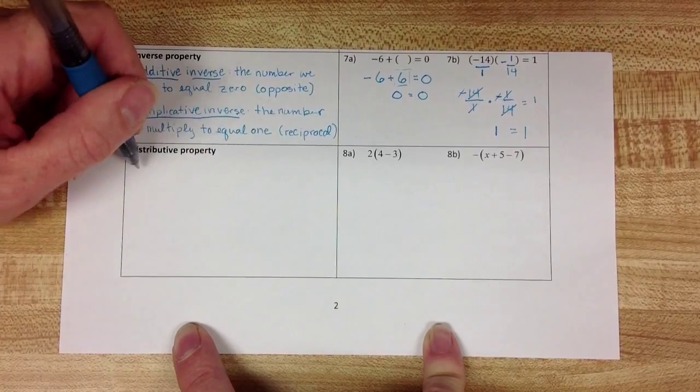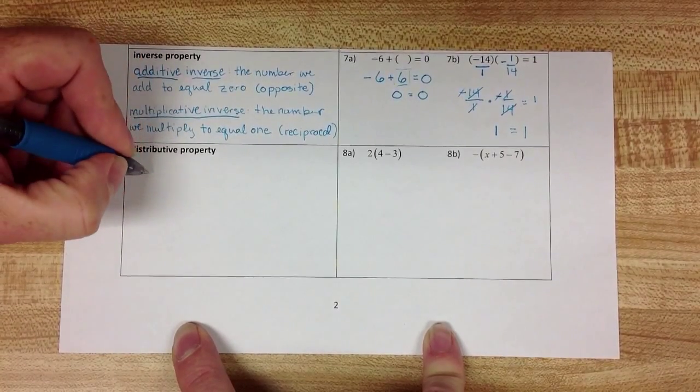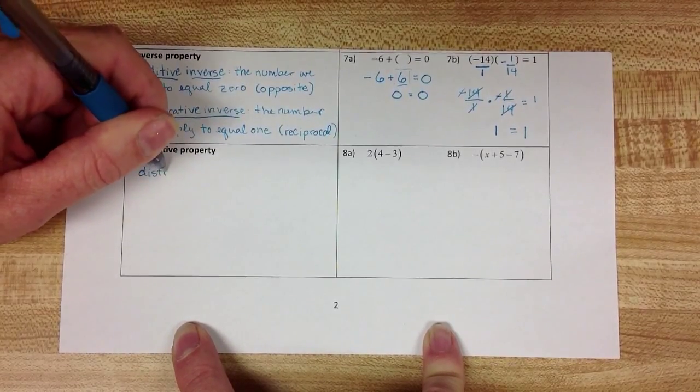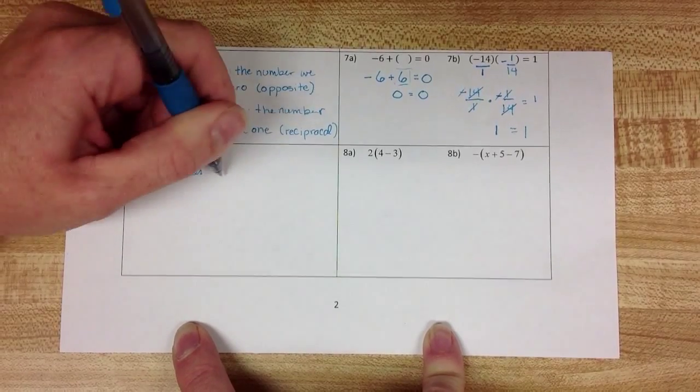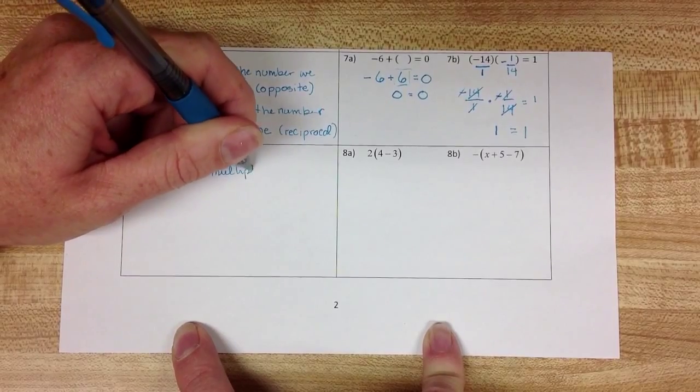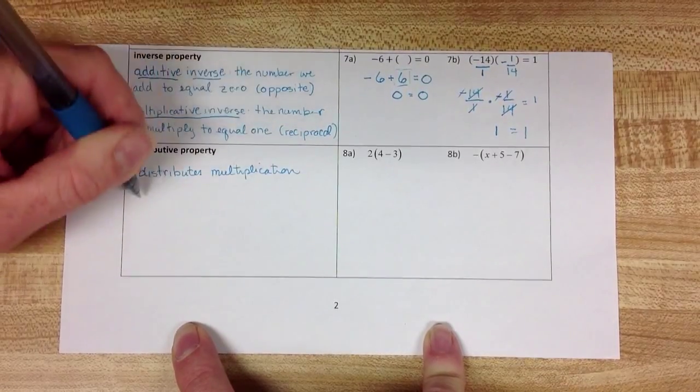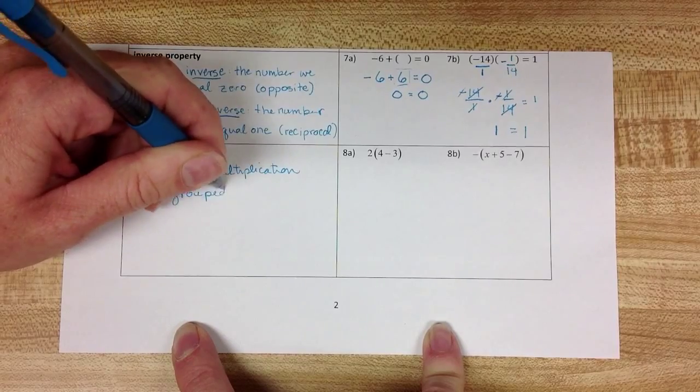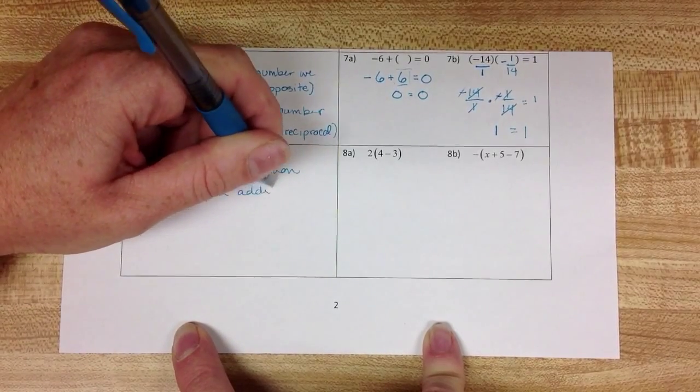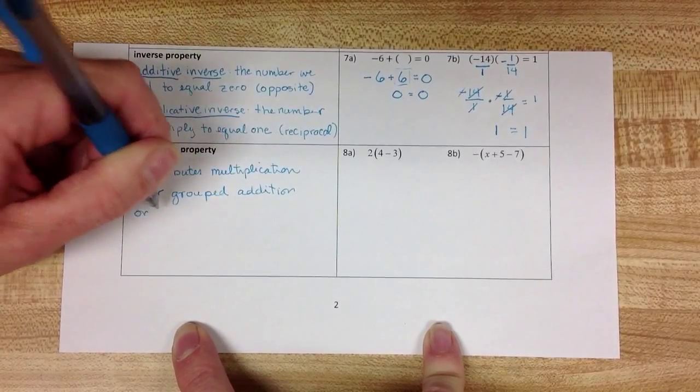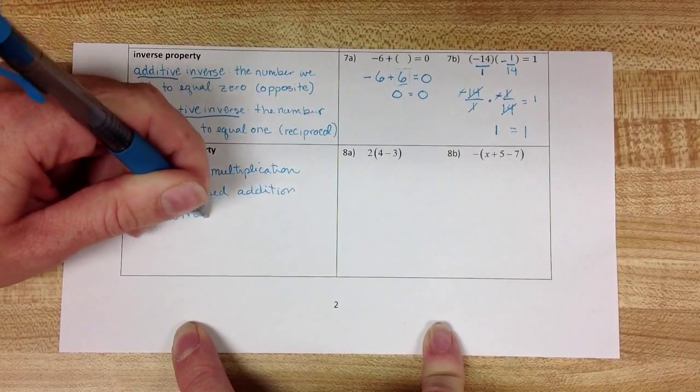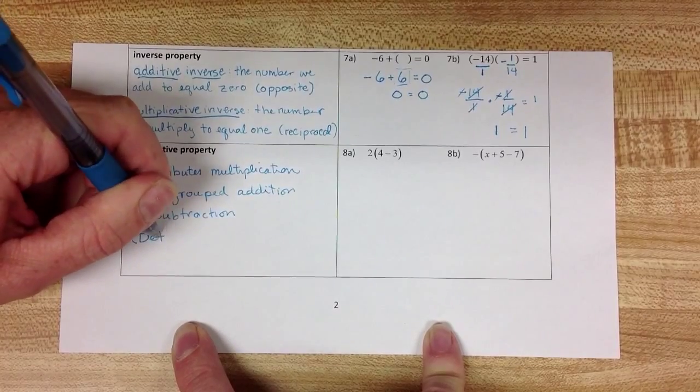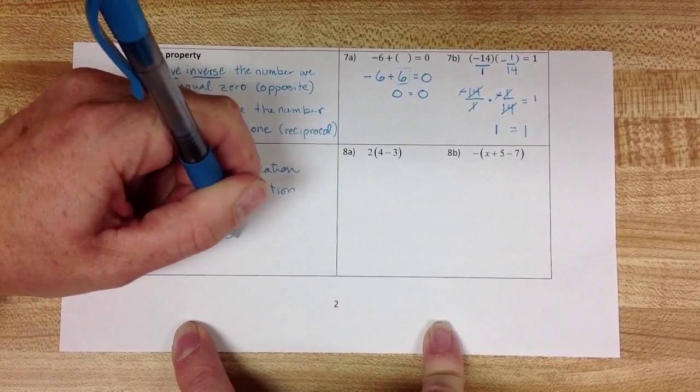So the distributive property says, I'm going to give it to you in the abstract because it's hard to say it in words. It distributes multiplication over grouped addition or subtraction. You can also think of it as a detour for order of operations.